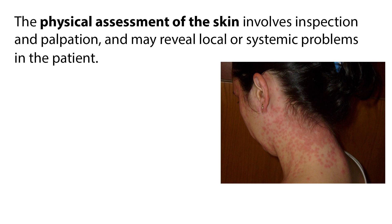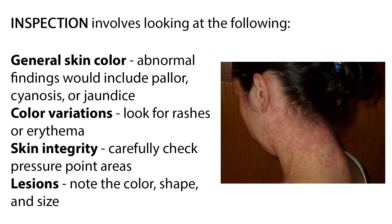The physical assessment of the skin involves inspection and palpation, and may reveal local or systemic problems in the patient. Inspection involves looking at general skin color — abnormal findings would include pallor, cyanosis, or jaundice — color variations such as rashes or erythema, skin integrity by carefully checking pressure point areas, and lesions, noting the color, shape, and size.